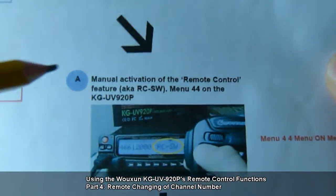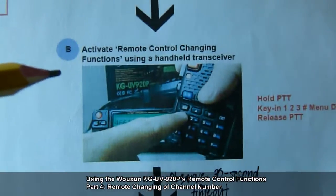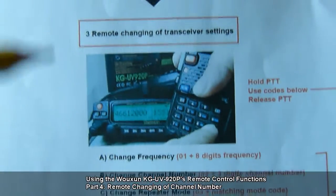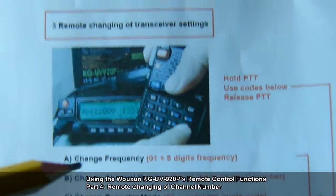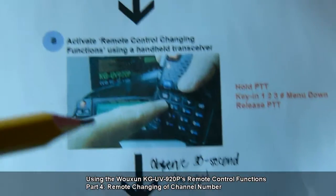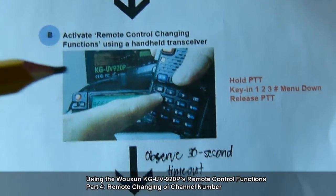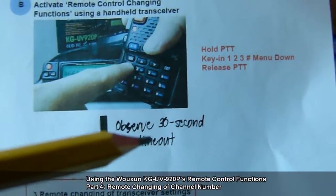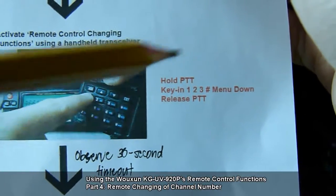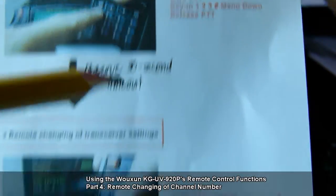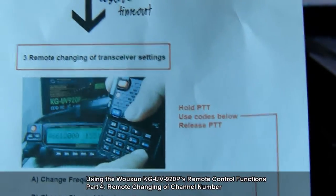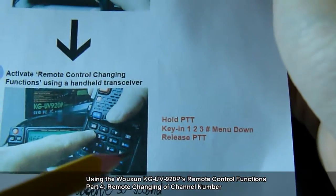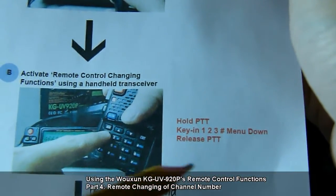Now that we are done with procedure A, we can go to procedure B and then 3B, because what we are trying to accomplish is changing the channel number. Take note that after doing procedure B there is a 30-second timeout. So after doing all the steps shown in red, within 30 seconds you have to press 0, 2 plus the 3-digit channel number. Let's try it: 1, 2, 3, 1, pound, menu down, release.